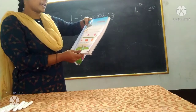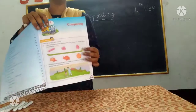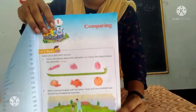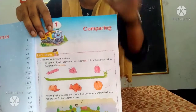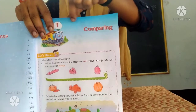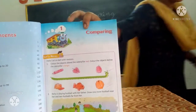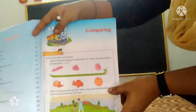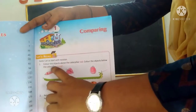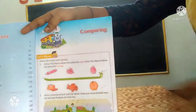Now open your textbooks — mathematics textbook, page number 1. The first chapter name is comparing. In comparing, Roman numeral 1: color the objects above the caterpillar red.